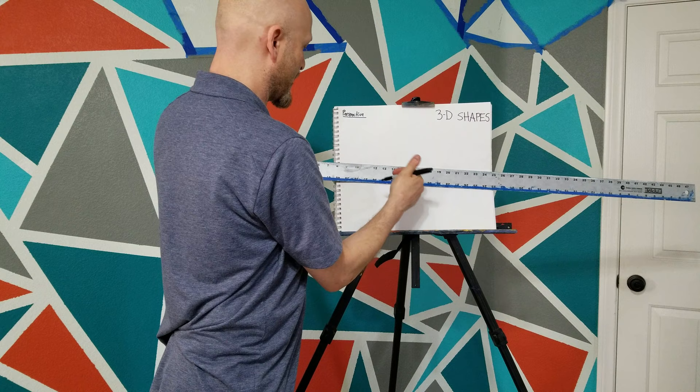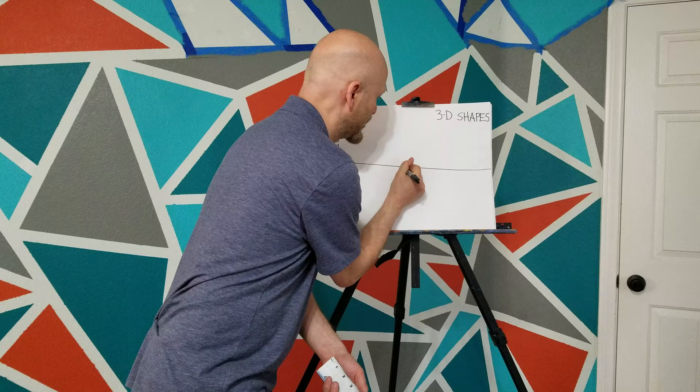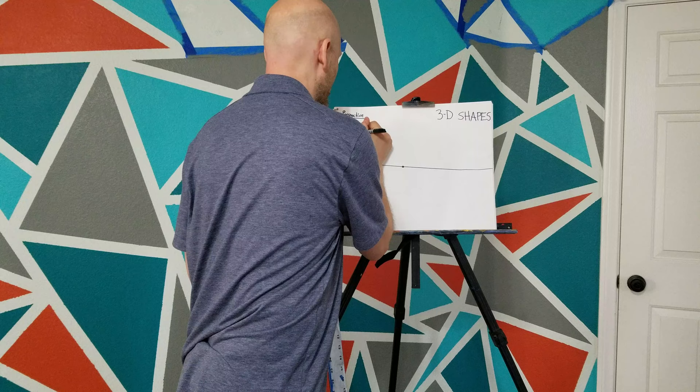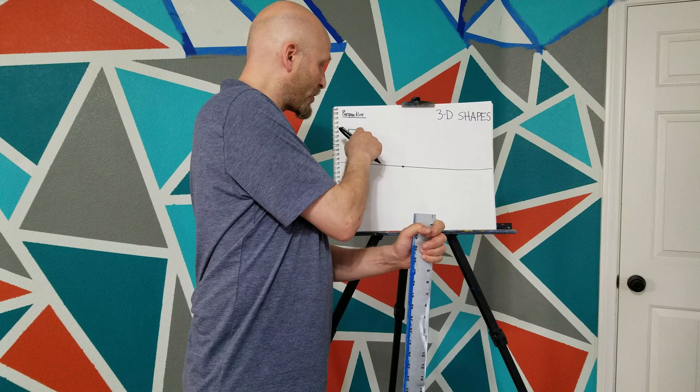We start with a horizon line going down the middle of our page, and then a vanishing point. The vanishing point is a point anywhere on the horizon line, so I'm going to put it right in the middle — make it noticeable but not too big, so you can see it. The next thing we're going to do is draw a shape. I'm going to start simple with just a square, putting it above and to the left of my vanishing point.